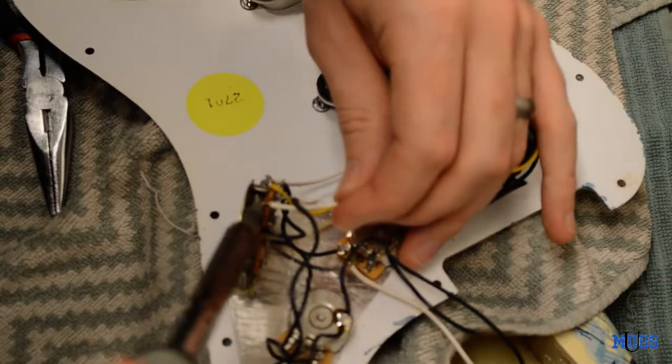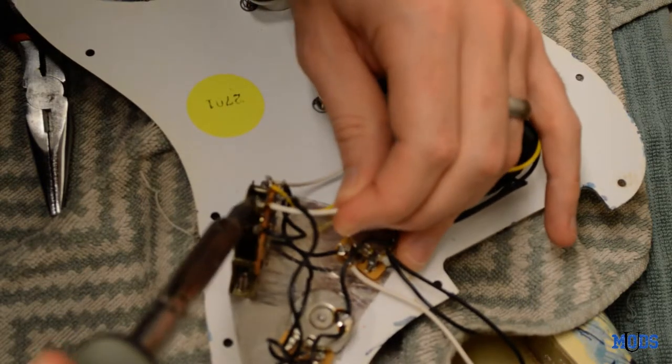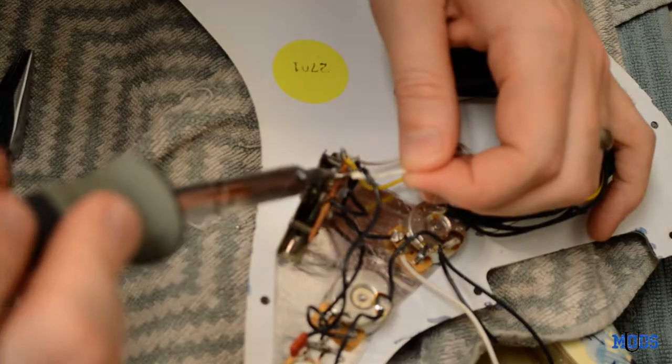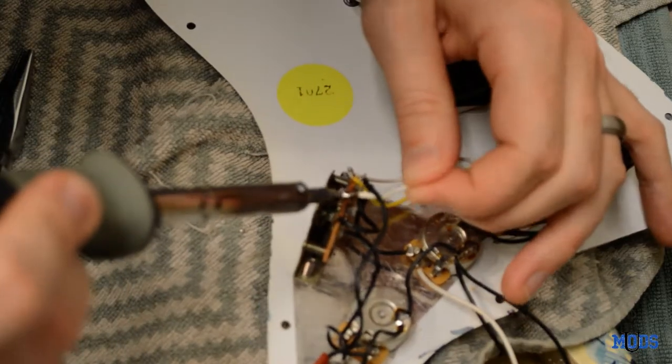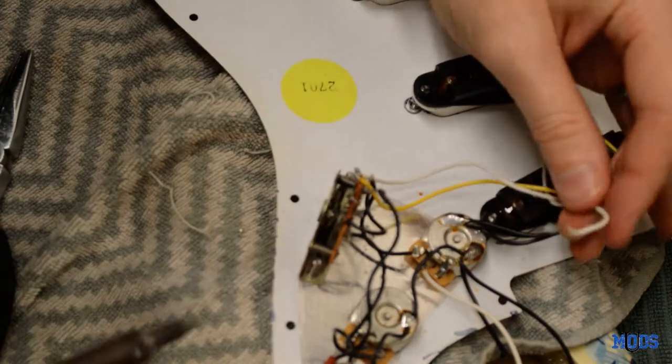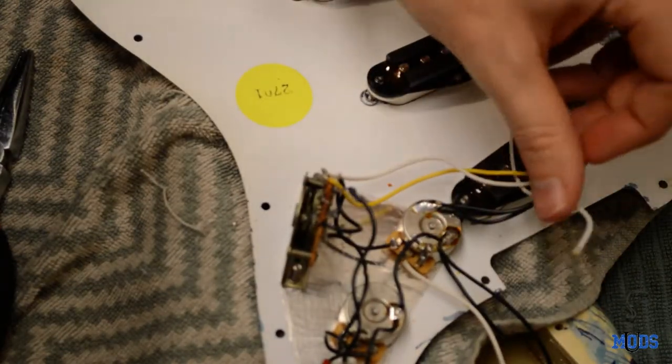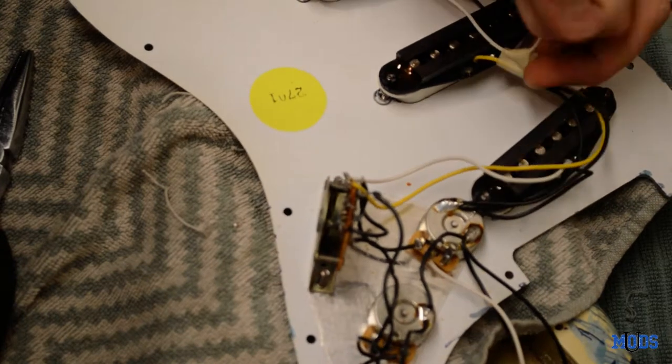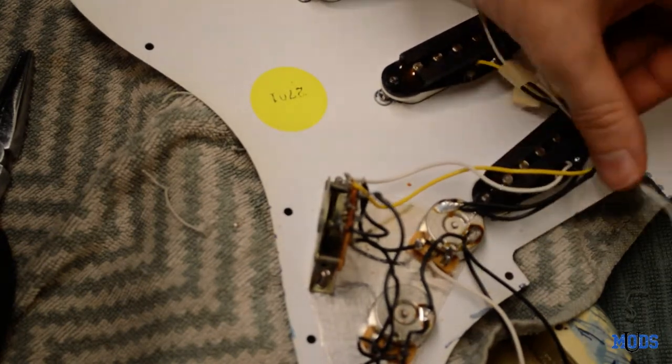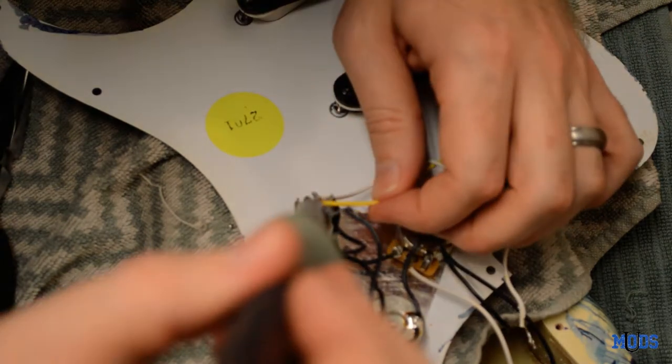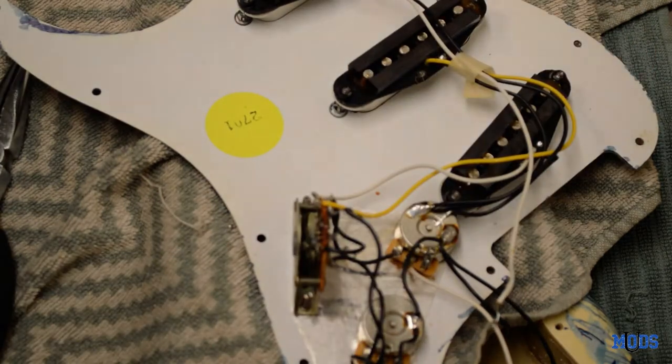And these braided wires wrapped around a selector switch, so they're always a pain to get off. And there is the neck lead wire.